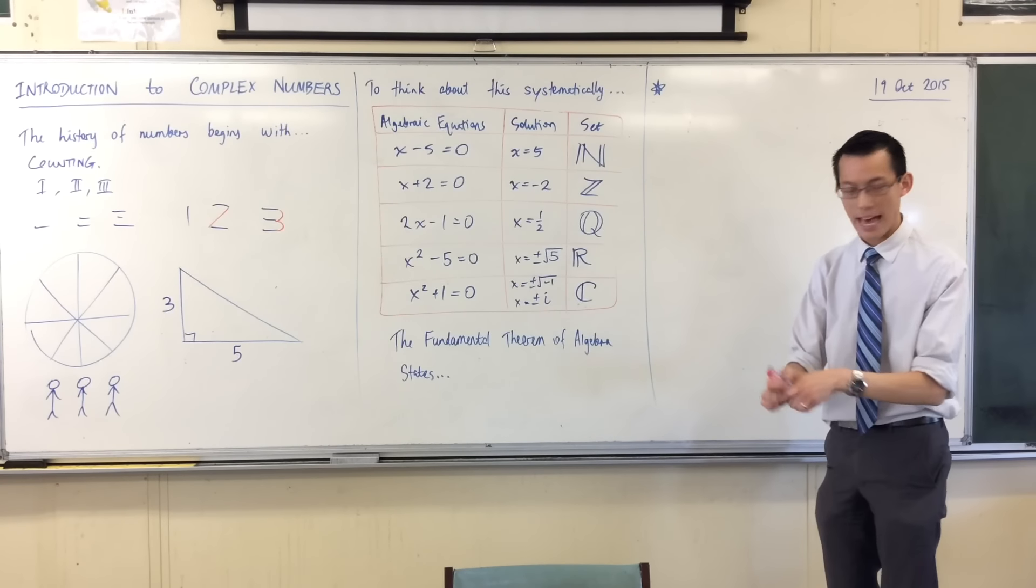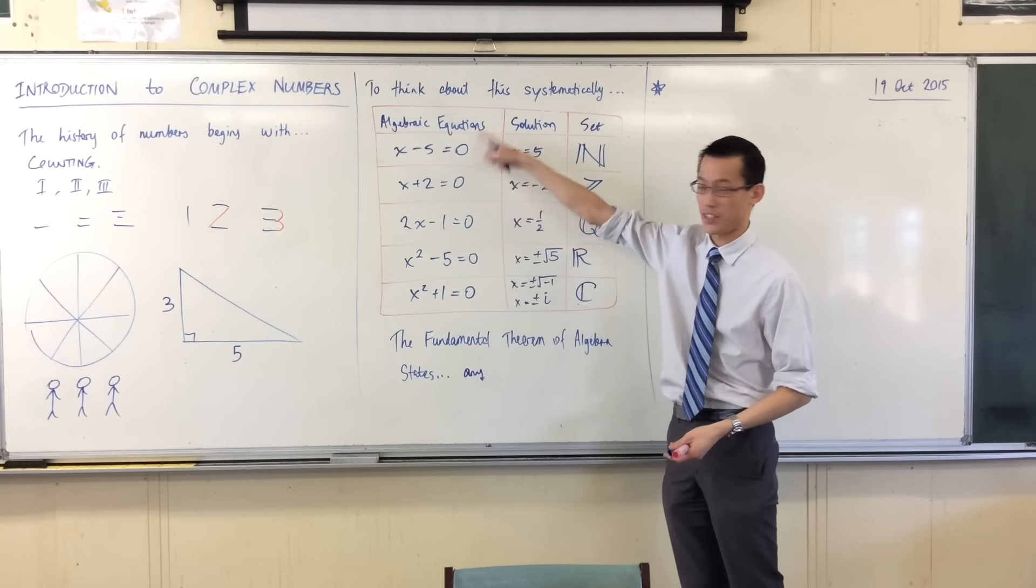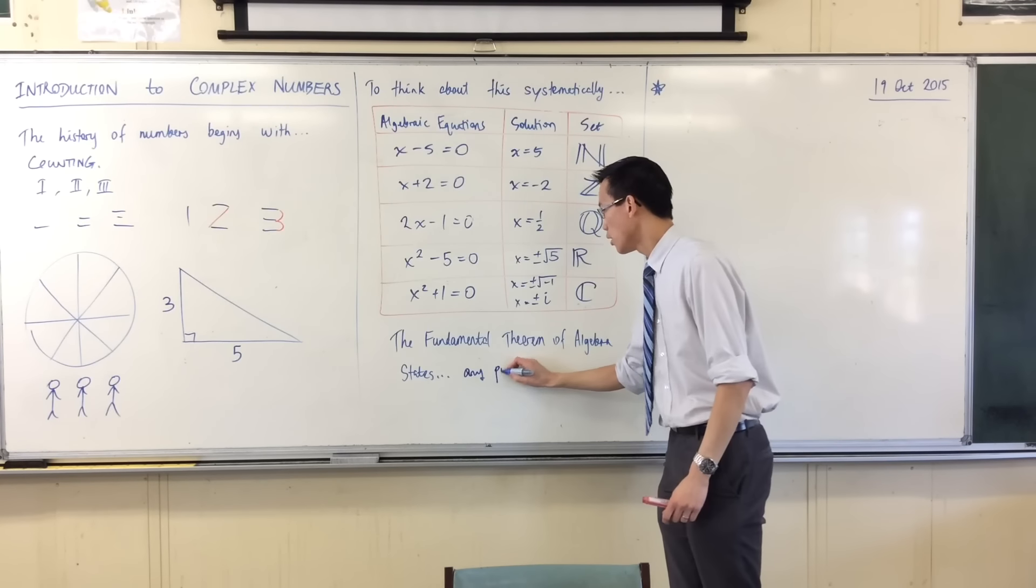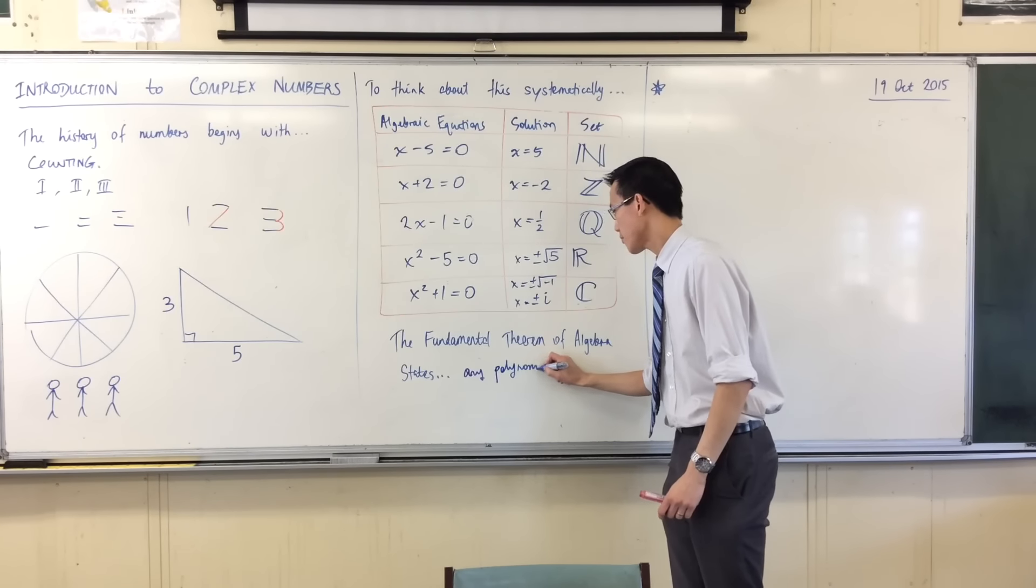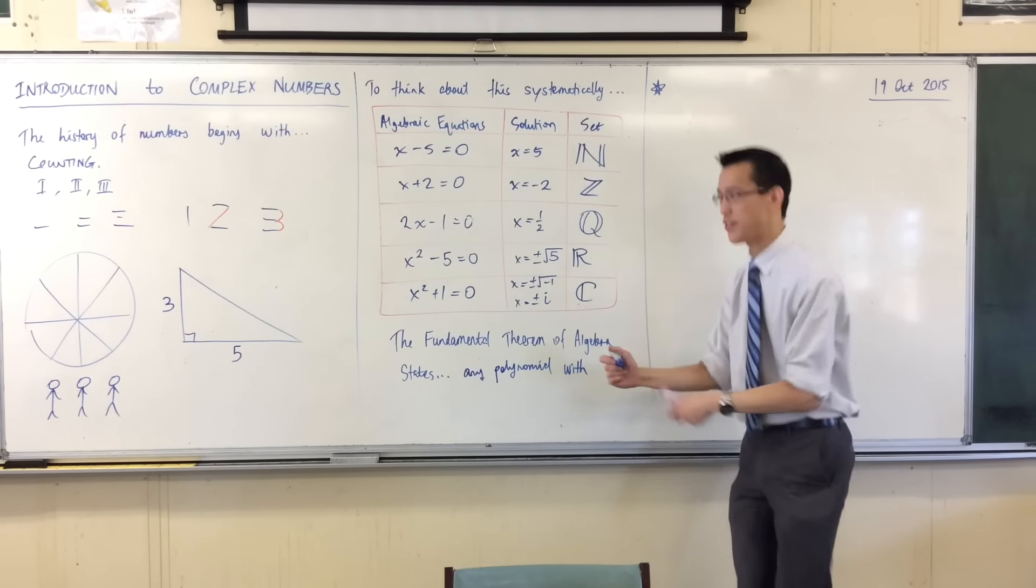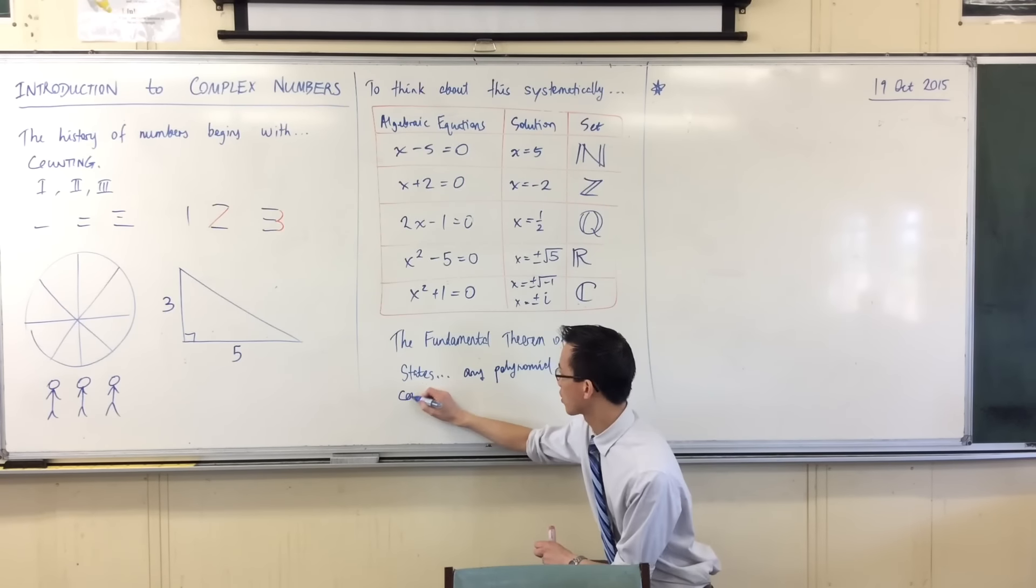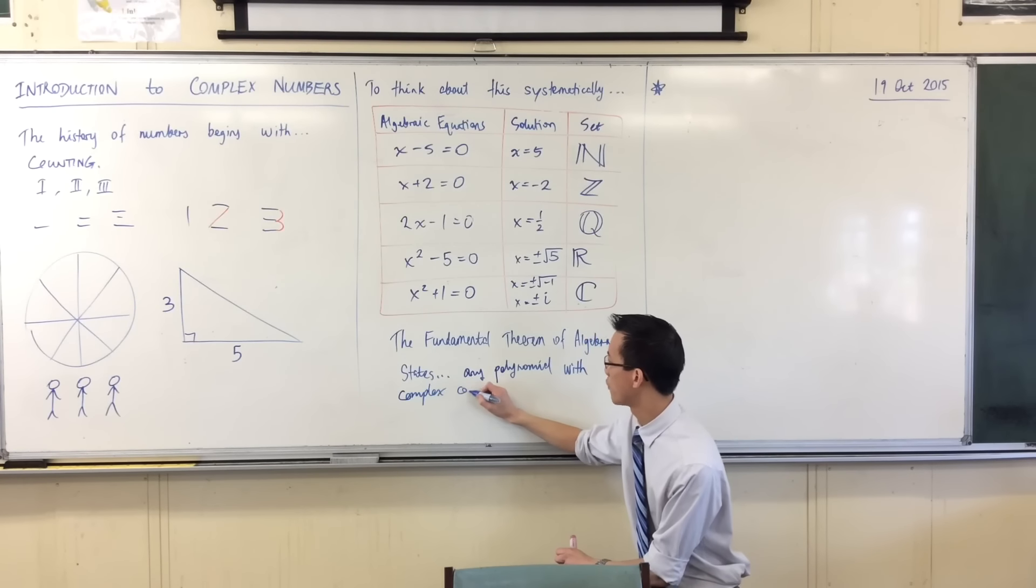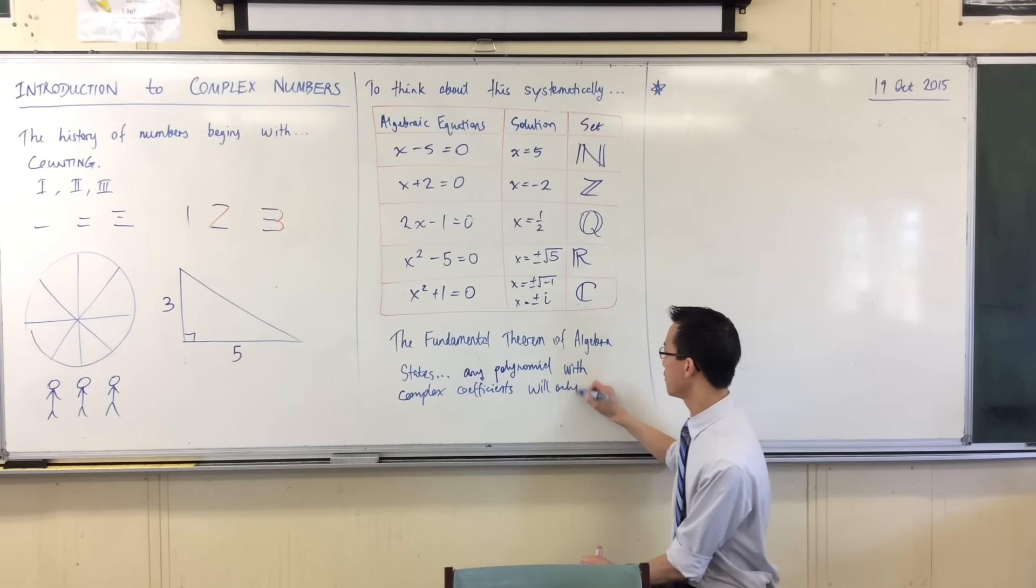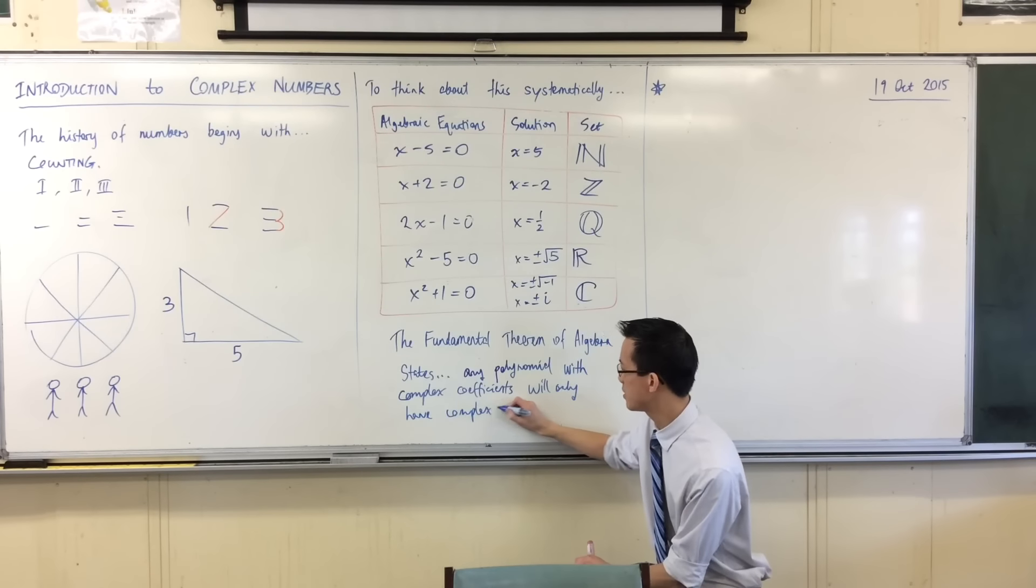What it states is that any polynomial, so you see, these are all polynomials. I mean, admittedly, these are very simple ones. They're just linear, but I could make them more complicated if I want to. Any polynomial with complex coefficients, coefficients, so that's these numbers in here, these numbers out the front. Any polynomial with complex coefficients, it will only have complex roots. This is the end of the line.